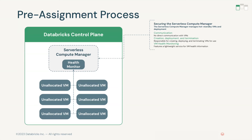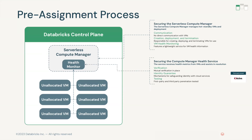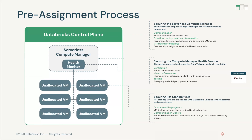During registration, a VM connects to the registration method on the serverless compute manager to be added to the unallocated pool and await assignment. The connection is mutually authenticated — the TLS certificate used for the serverless compute manager is securely distributed via the AMIs, allowing the VM to authenticate the API. These processes of verification and identity guarantees are first-party and third-party penetration tested. Once the VM registers, the serverless compute manager adds the VM to the unallocated pool, and mechanisms are in place that do not allow re-registration of the same VM, avoiding replay attacks.